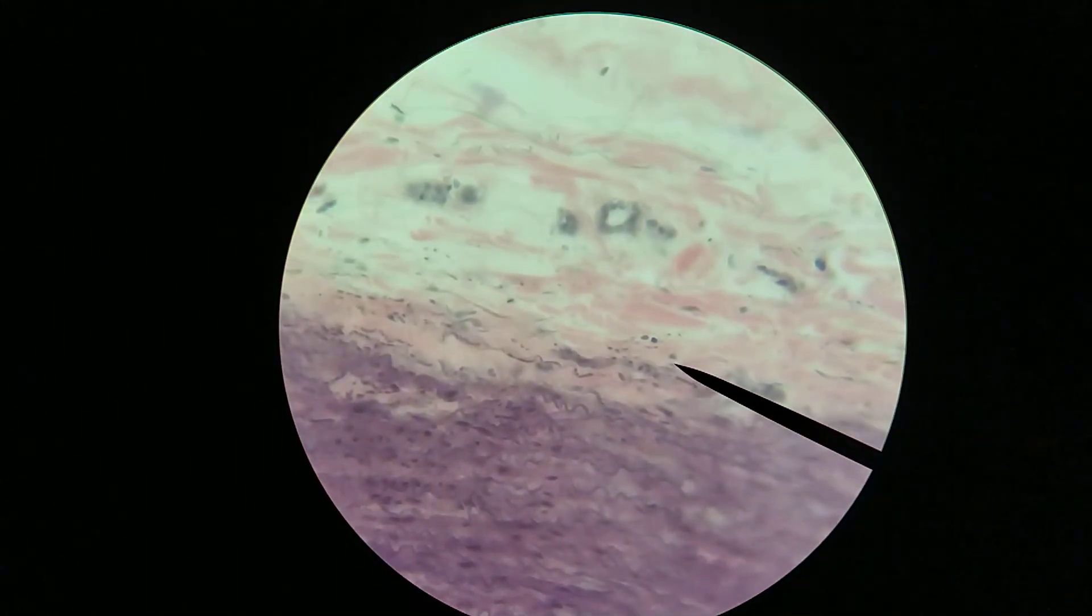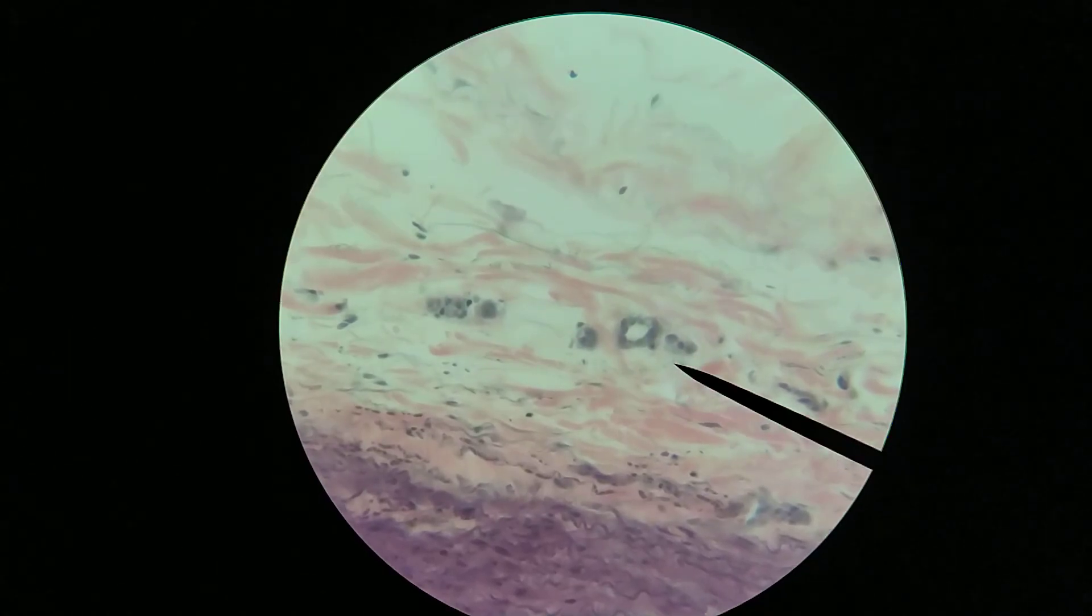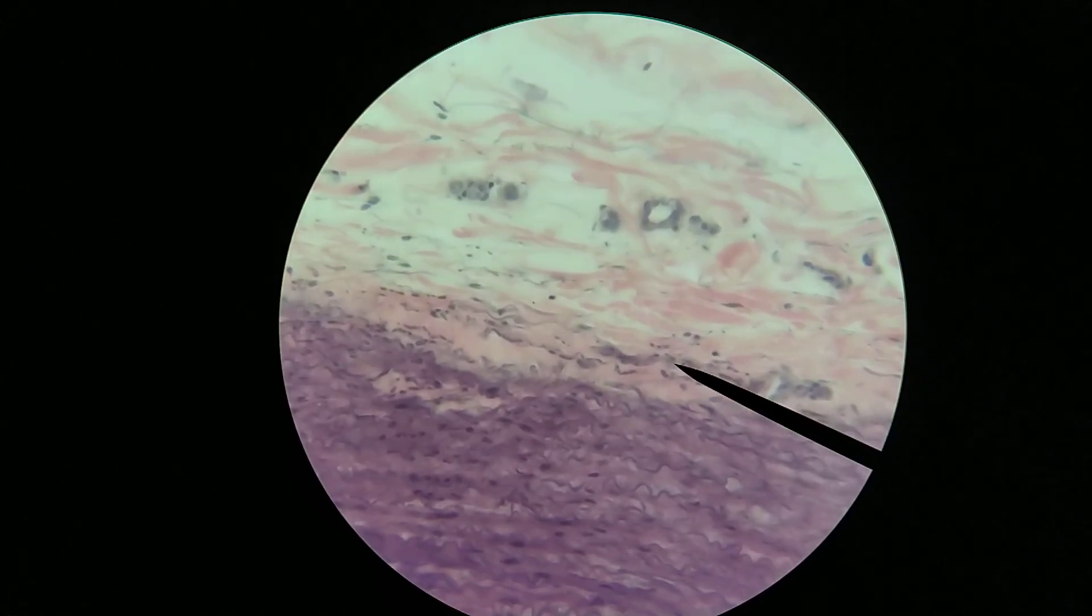But a lot of these cells, especially deeper in, will not be able to get that to diffuse all the way through. So you have to have support from the outside by smaller blood vessels supporting these tissues around the outside.